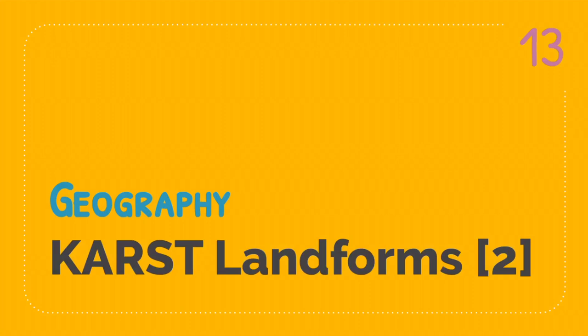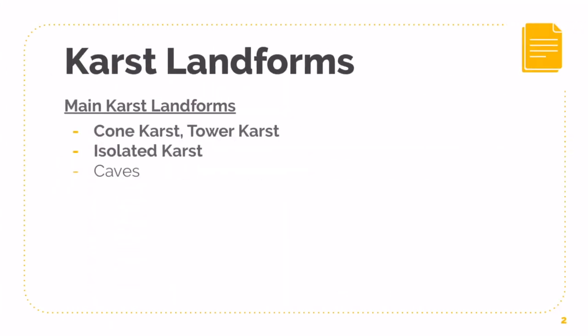I'll jump right into this video because Cast Landforms is quite a chunky bit. I want to take my time to go through it properly, because I know Cast is a topic that a lot of you tend to struggle with, especially when it comes to physical geography as a whole. Firstly, you need to understand that there are three main Cast Landforms: the Cone Cast, the Tower Cast, and lastly the Isolated Cast. These three are the main landforms you need to know for your syllabus — check your syllabus document.